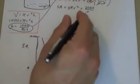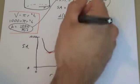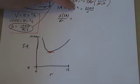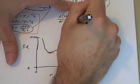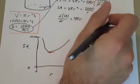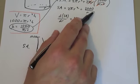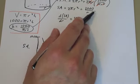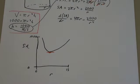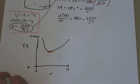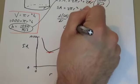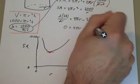Here's our surface area function. The derivative of the surface area with respect to r: 2π is a constant, the derivative of r² is 2r, so we get 4πr. The derivative of 2,000/r — think of that as 2,000r⁻¹ — gives negative 2,000r⁻². We want to set the derivative equal to 0 and solve because we want the tangent line horizontal: 0 = 4πr − 2,000/r².